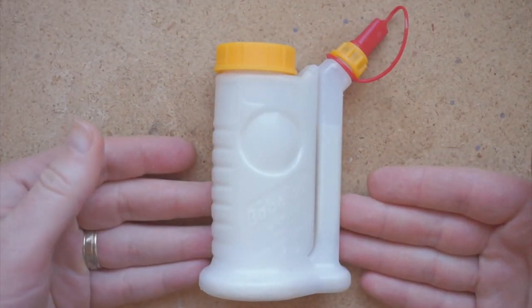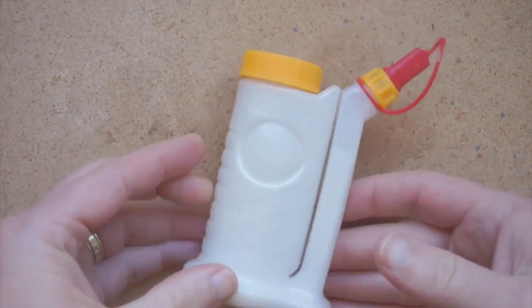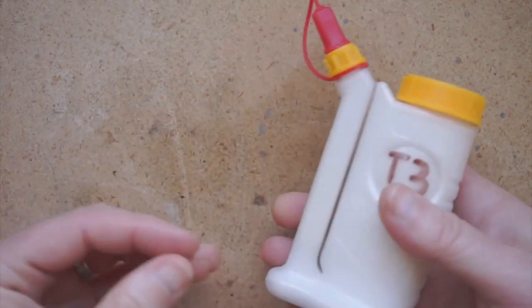This is the Fast Cap BabeBot. It's a four ounce plastic bottle made for glue. I've got mine filled with wood glue.